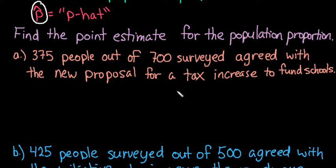We're going to find the point estimate for these two situations. The first one is 375 people out of 700 surveyed agreed with a new proposal for a tax increase to fund schools. So in order to find our point estimate p hat, all we have to do is take our number of successes and divide it by the total number of people surveyed.